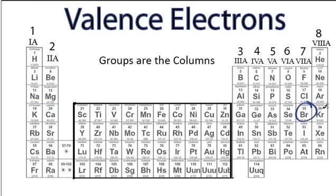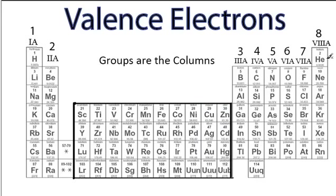One more. How about bromine? Group 7, so it has 7 valence electrons. Let's wrap up with 2 exceptions. How about copper? Remember, copper is in the transition metals, so we're not going to worry about that. And then, how about helium? Remember helium — the exception — has 2 valence electrons. Those are the valence electrons on the periodic table. If you know your group numbers, and you remember that groups go up and down, you'll have no problem figuring out how many valence electrons there are.